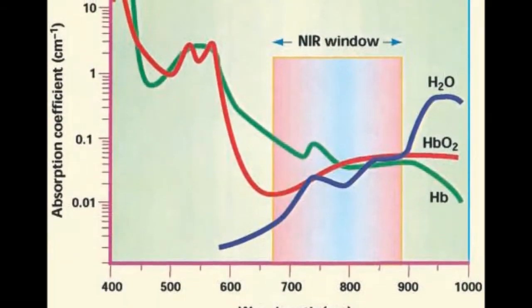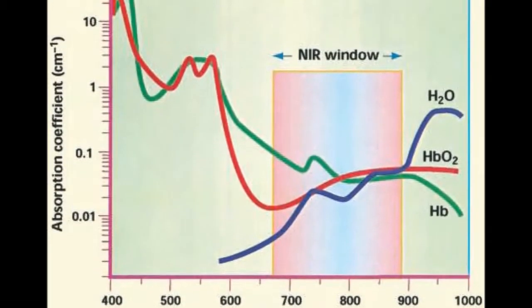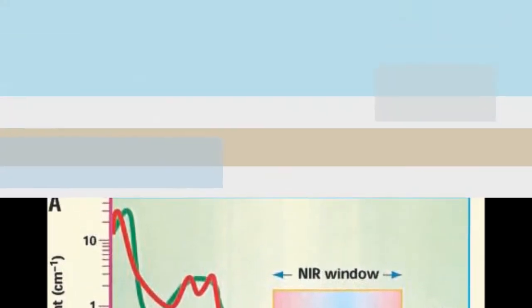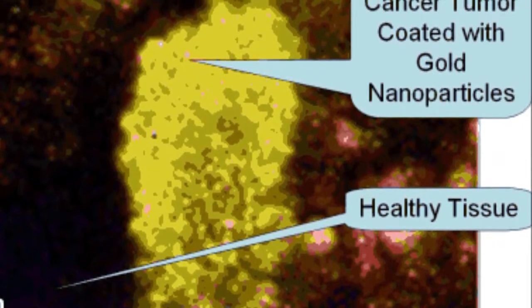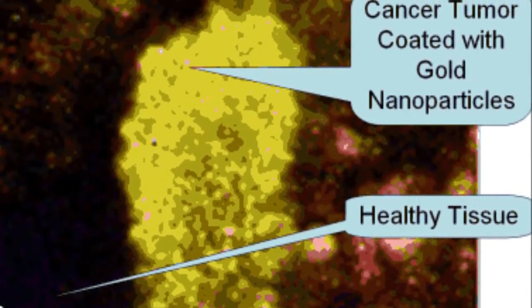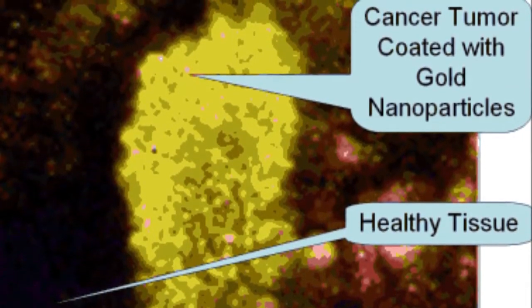The trick is to use a laser with a wavelength that correlates with the properties of the nanostructures. A near-infrared laser works well in photothermal therapy because it uses a wavelength that influences nanoparticles without affecting other body tissues.